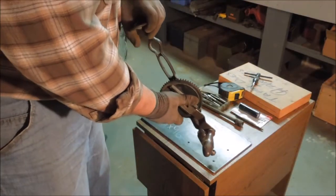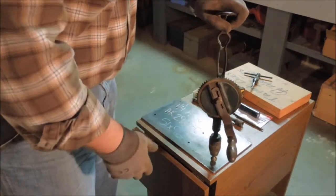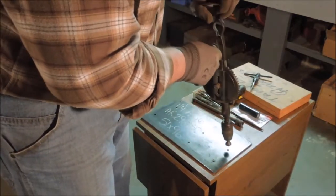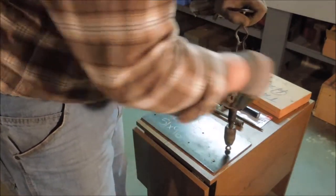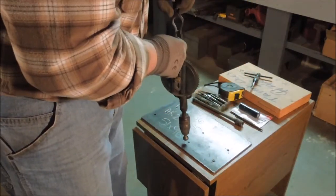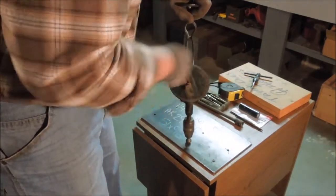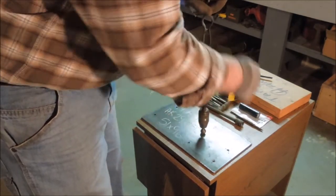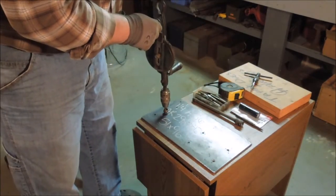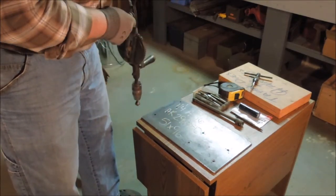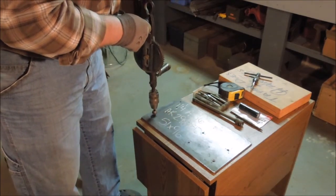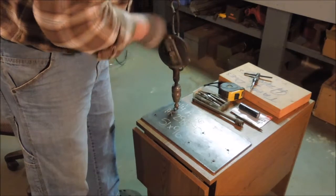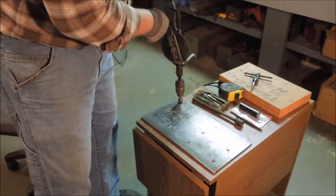I take this Miller's Falls Breast Drill and just countersink those holes. Doesn't take much. This removes the burr, makes it so that the thread starts easier. And when you have a thread in there, since the first thread is actually countersunk below the surface of the plate, it's not very easily damaged.